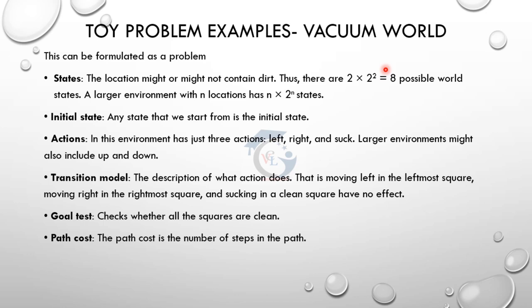There are 2 locations: left and right. 2 locations can be clean or dirty, so 2 power 2 gives us the possibilities. Left location can be left or right; right location can be left or right - this is a total of 8 possibilities. The initial state is where we start to clean up.